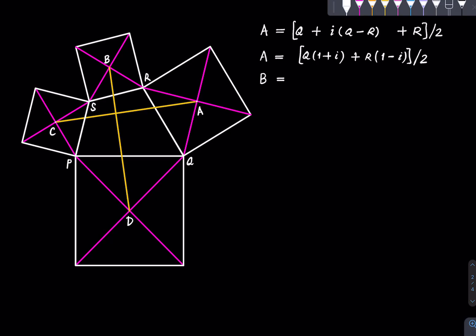Similarly, B would turn out to be R times (1 plus i) plus S times (1 minus i) divided by 2. C comes out to be S times (1 plus i) plus P times (1 minus i) divided by 2, and D would be P times (1 plus i) plus Q times (1 minus i) divided by 2. So we have found out the four centers.